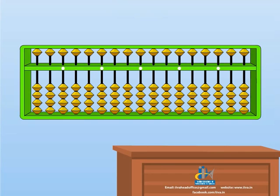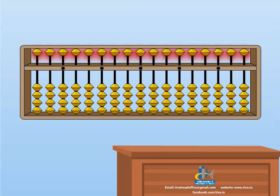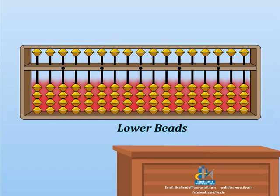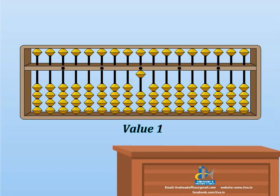This is an abacus tool. This is the frame of the abacus. Its bar is known as the value bar. Whenever a bead touches the value bar, it attains some value. These are upper beads. Each upper bead has value 5. These are lower beads. Each bead has value 1.